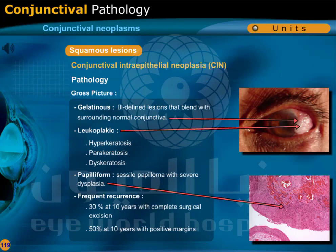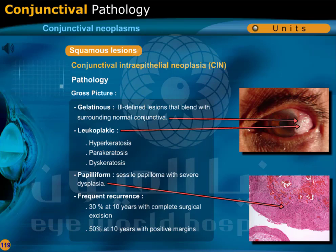Conjunctival intraepithelial neoplasia may be gelatinous, appearing as ill-defined lesions that blend with surrounding normal conjunctiva; leukoplakic, showing hyperkeratosis, parakeratosis, and dyskeratosis; or papilliform, appearing as sessile papilloma with severe dysplasia. Recurrence is frequent: 30% at 10 years with complete surgical excision, and 50% at 10 years with positive margins.